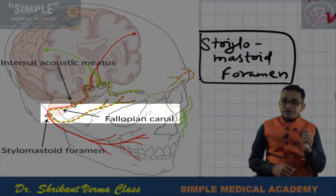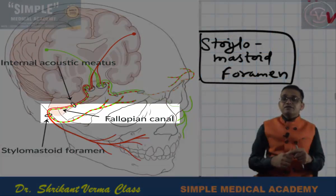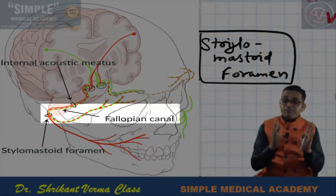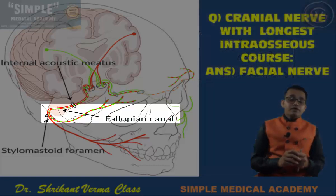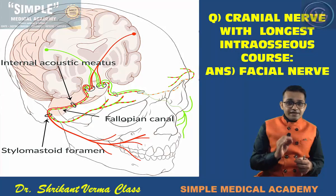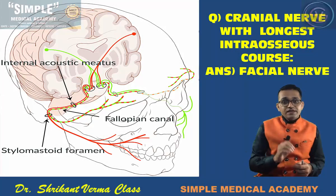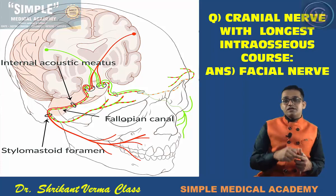During this course, the facial nerve runs inside the bony petrous part of the temporal bone with a very long course. MCQ point: which cranial nerve has the longest intracranial course? The answer is the facial nerve.